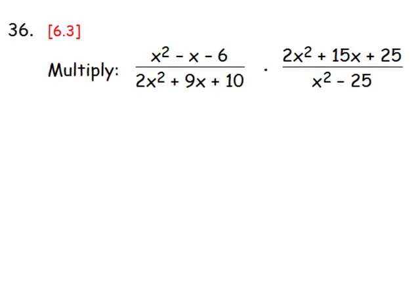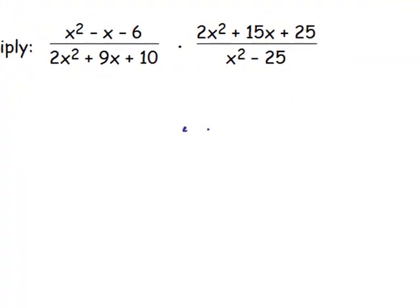Number 36. What we're going to do with this is multiply. But really, we need to factor each numerator and denominator so that we can see what factors can be divided out. The simplest of all of these is the second denominator, x squared minus 25. That is the difference of squares and factors into a pair of conjugates, x minus 5 times x plus 5.